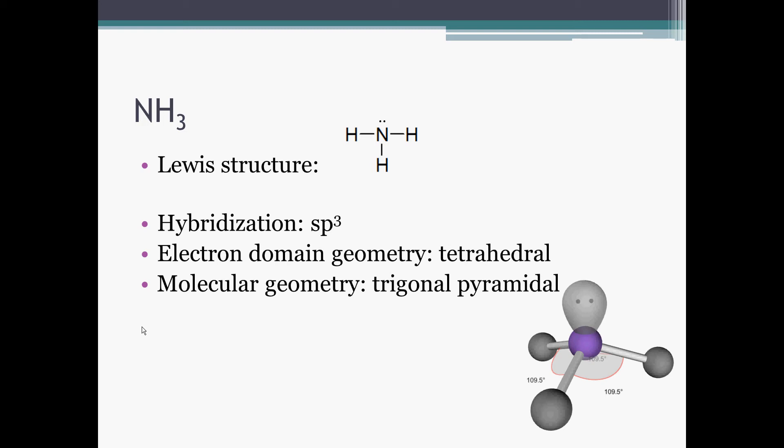And so that domain shape is tetrahedral. But the shape of the molecule itself is a little squished because we only have the three points and the central atom. And we call the shape trigonal pyramidal.